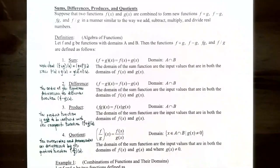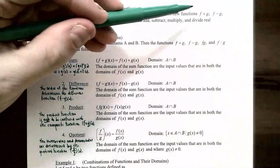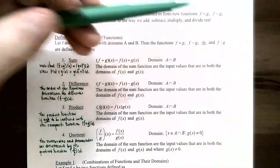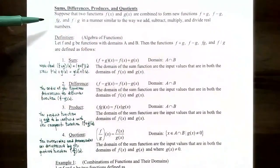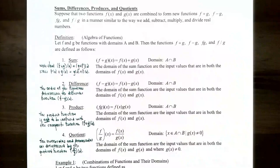Let's talk about the sums, differences, products, and quotients of two functions. Suppose you have two functions, f of x and g of x, and you want to combine those two functions using an operation to form a new function. We're going to have functions f plus g, f minus g, f times g, and f divided by g. These functions are formed in a similar way that we add, subtract, multiply, and divide real numbers.